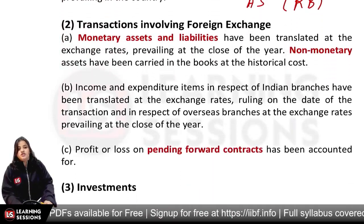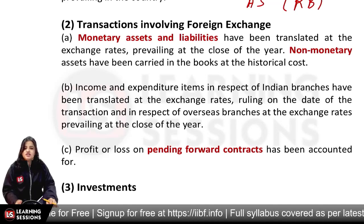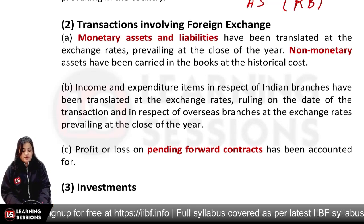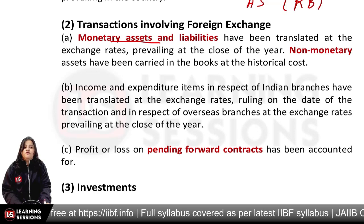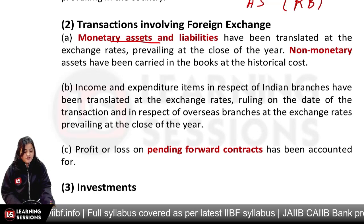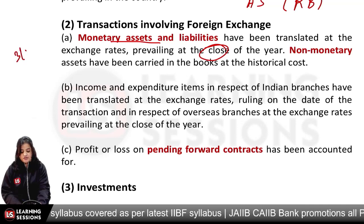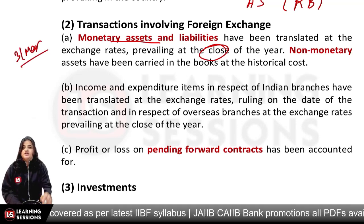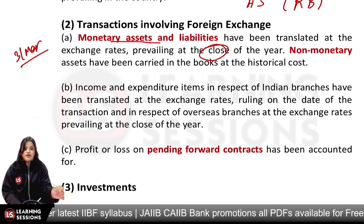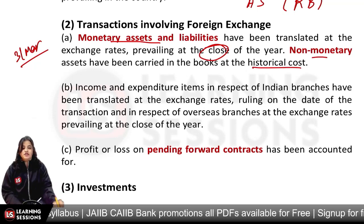Then we have transactions involving foreign exchange. In foreign exchange, we tell users that for our monetary assets and liabilities, we are showing the exchange rate prevailing at the close of the year — that is, on 31st March, whatever the foreign exchange rate is, we apply it to monetary assets. For non-monetary assets, we use historical cost.